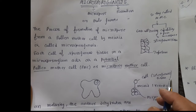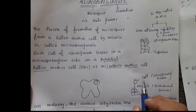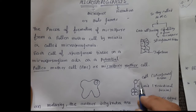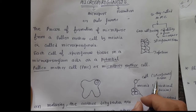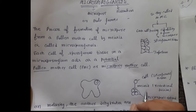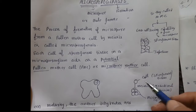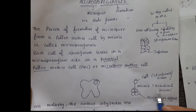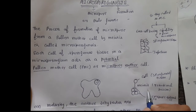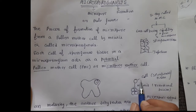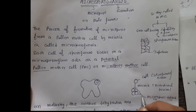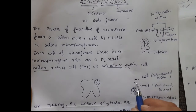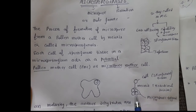In meiosis, reductional division occurs, meaning the chromosome number is halved. The sporogenous tissue is diploid. When meiosis division takes place in the sporogenous tissue, it will produce 4 microspores.